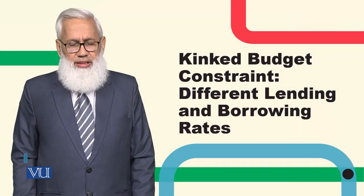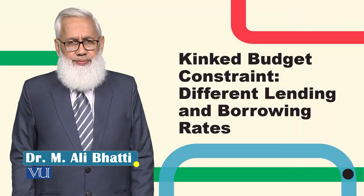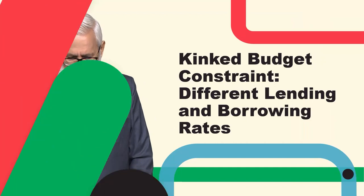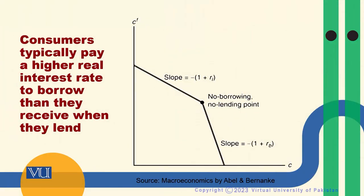Budget Constraint: Different Lending and Borrowing Rates. Dear students, our discussion of budget constraints was based on the underlying assumption that the consumer faces the same interest rate whether he is borrowing something or he is lending something.